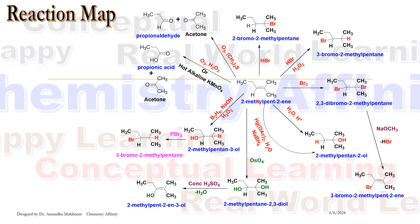Same ozonolysis but followed by oxidative workup: the right hand side moiety gives acetone but the left hand side moiety will give an acid. So we are getting propanoic acid. We also can use hot alkaline KMnO4 to get the same product.